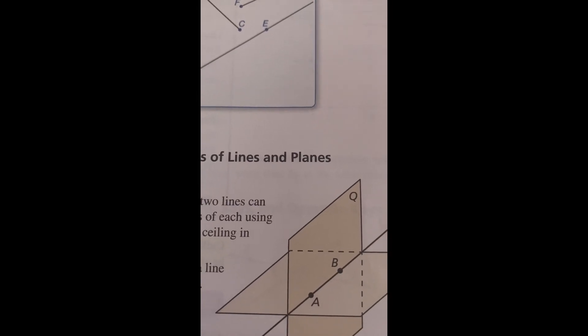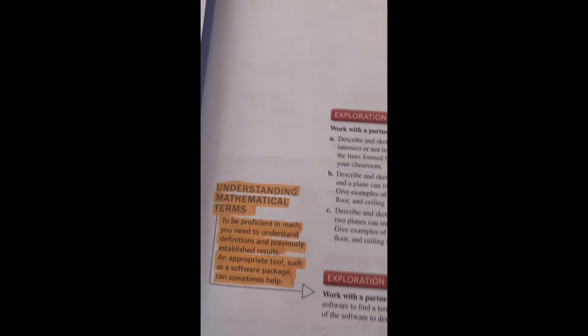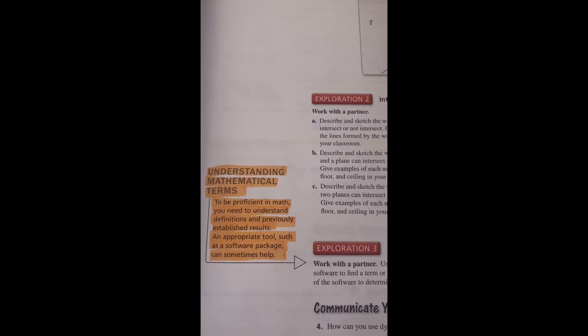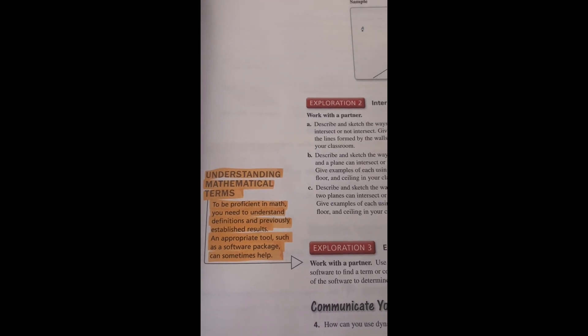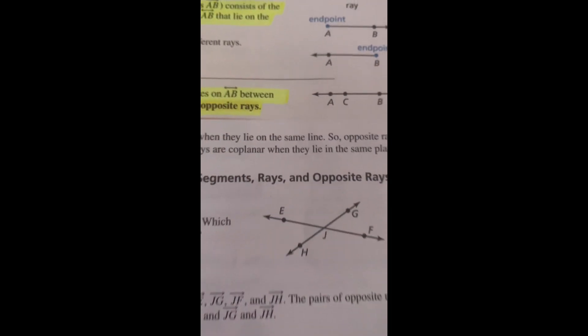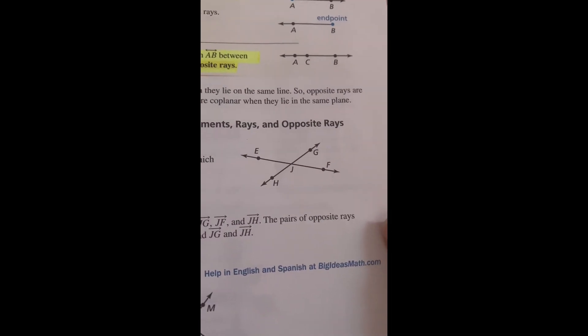1.1 Points, Lines, and Planes. Understanding Mathematical Terms: To be proficient in math, you need to understand definitions and previously established results. Appropriate tools such as a software package can sometimes help. Common Error: An example - ray 2G and ray JF have a common endpoint.